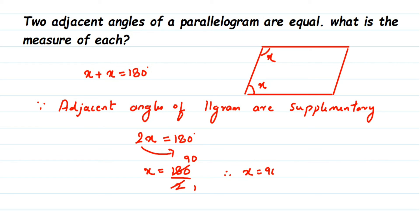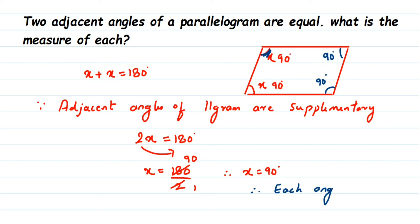So x equals 90, which means both adjacent angles are 90 degrees. We're asked for the measure of each angle. Since opposite angles in a parallelogram are equal, the angle opposite to x is also x, which is 90 degrees. Similarly, the fourth angle is also 90 degrees. Therefore, each angle measures 90 degrees.